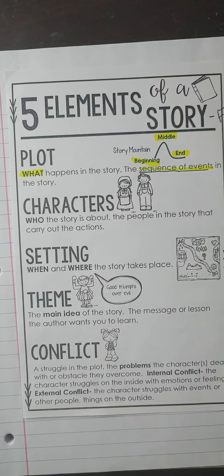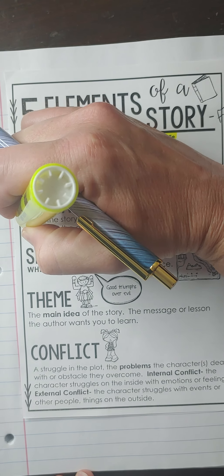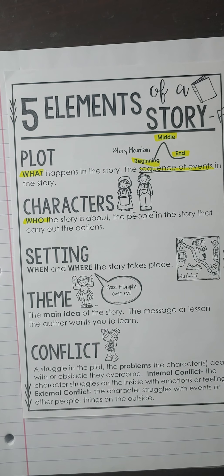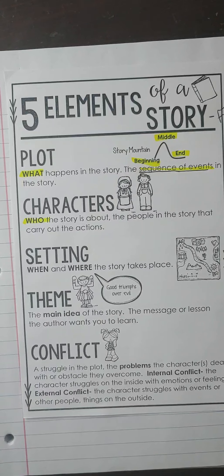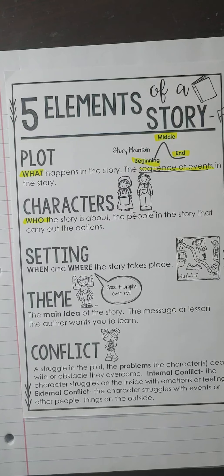The next big component is the characters. Without the characters, we wouldn't have a story. Characters are who the story is about. Last week we talked about character traits and discussed that characters don't necessarily have to be people. Characters can be objects like crayons, they can be animals like the emus, or they can be people or even aliens. It's just who the story is talking about.